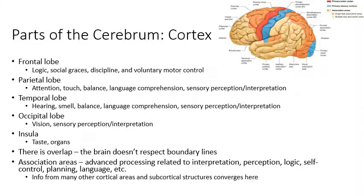Getting into the different lobes of the cortex: you have the frontal lobe, which is where you have your critical thinking, logic, and math skills, as well as self-control, discipline, and politeness — since politeness is a form of self-control. You also have voluntary motor control in the frontal lobe. The premotor cortex is where you plan voluntary motor movements, and the primary motor cortex — the strip just behind it — is where all your motor commands to skeletal muscles are initiated from.